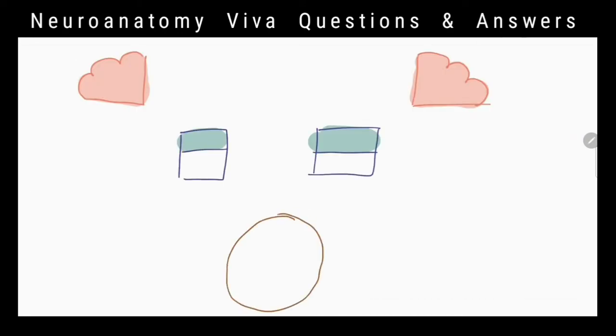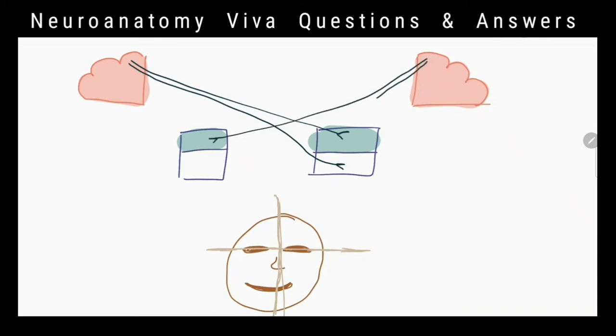Because the part of facial motor nucleus that controls the muscles of lower part of the face receives corticonuclear fibers only from opposite side of the cerebral hemisphere. So when there is a lesion in corticonuclear fibers on one side, the opposite side muscles get paralyzed.